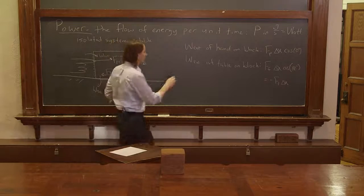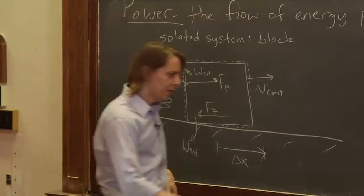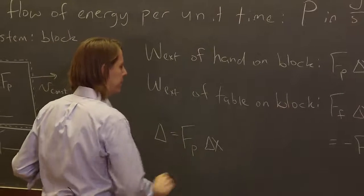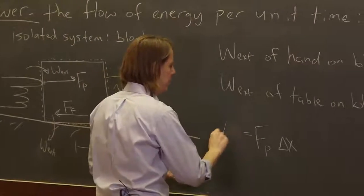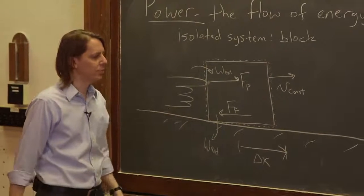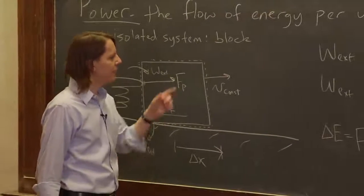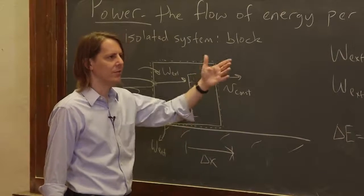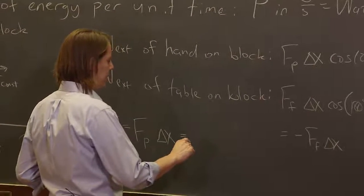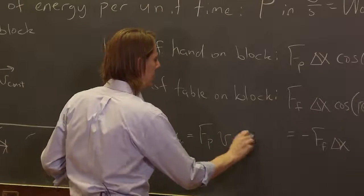If we want to write it down, the change in energy that's flowing through the system would be F times delta x. That's the change in energy flowing through. Now we don't have delta x, but we do have V. What is V equal to? That's the constant velocity, the average velocity, delta x over delta t. So we could replace delta x with velocity times time. So this is the force you're pushing with times the velocity times delta t.